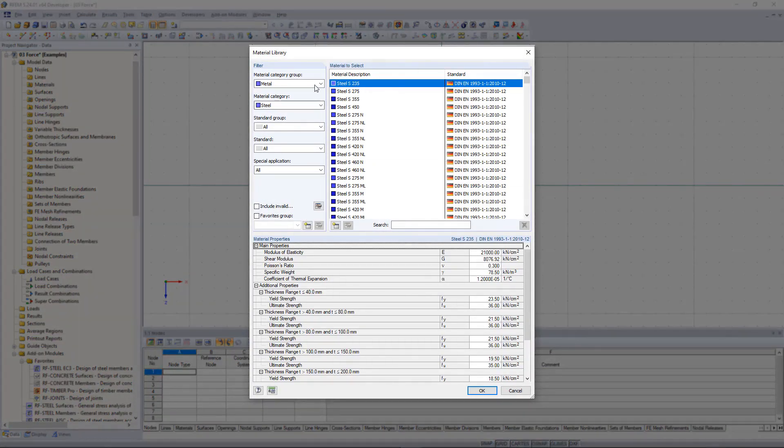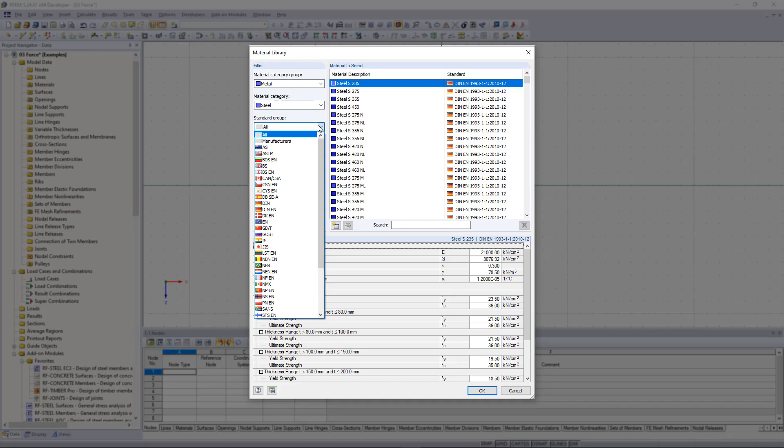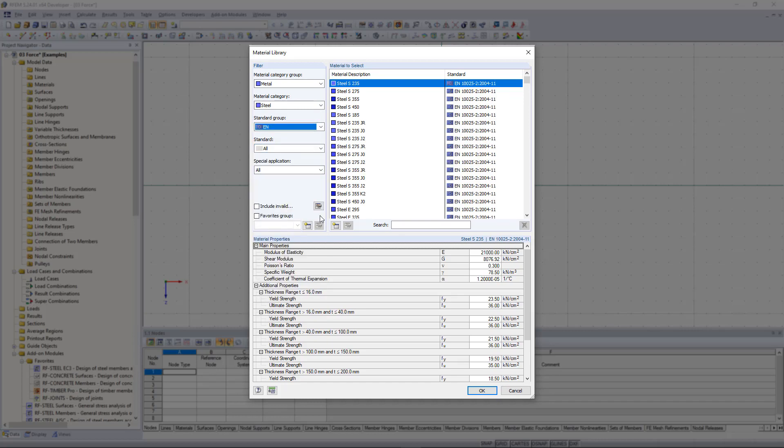We continue to select the materials according to the Eurocode standard and take a look at structural steel S-235. For steel, the specific weight is 78.5 kilonewtons per cubic meter.